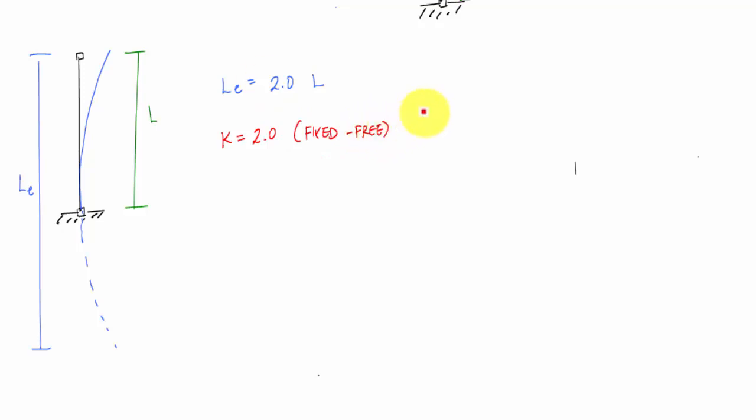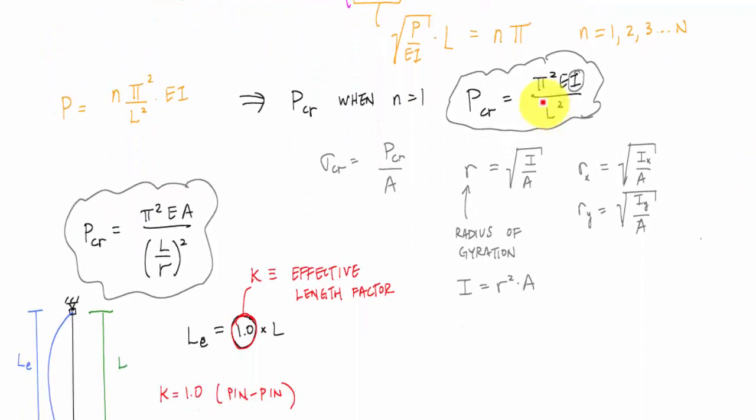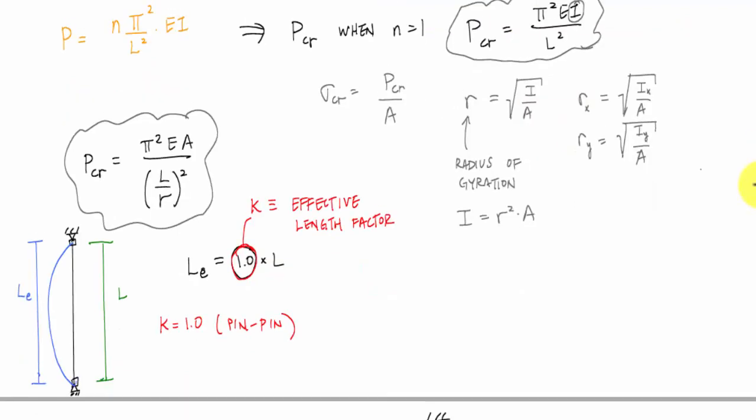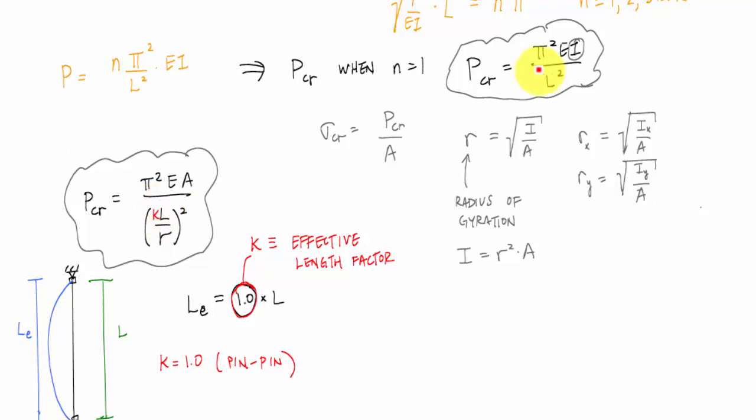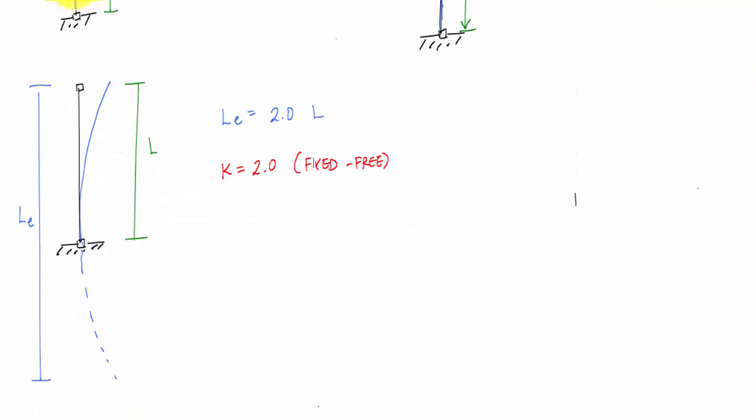And what this means is that when we derive this Euler buckling equation right here, we assumed that K was equal to 1. And really, that equation should have a K in front of each of these Ls such that our final equations should look like this.